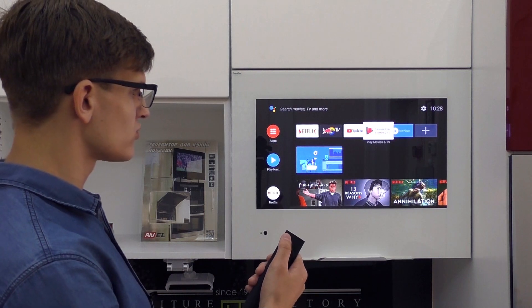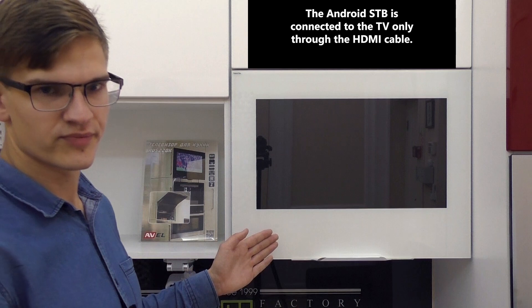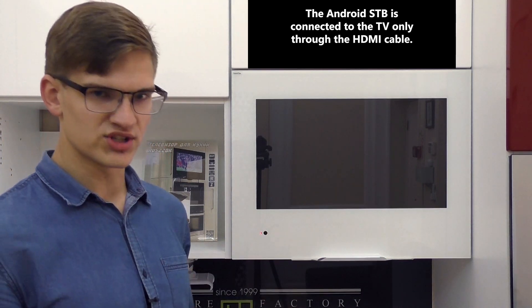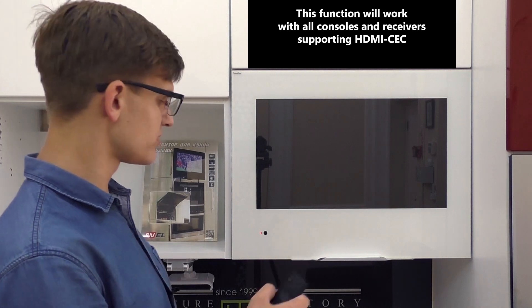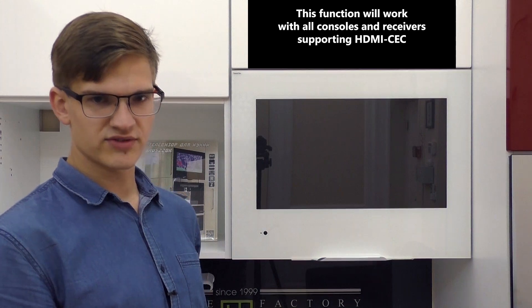If we want to turn on both, we also just press the power on button. Just one remote control. The turning on command will be transferred from the Android box to our TV by HDMI. This function works well with all Android devices and set-top boxes which support HDMI CEC function.